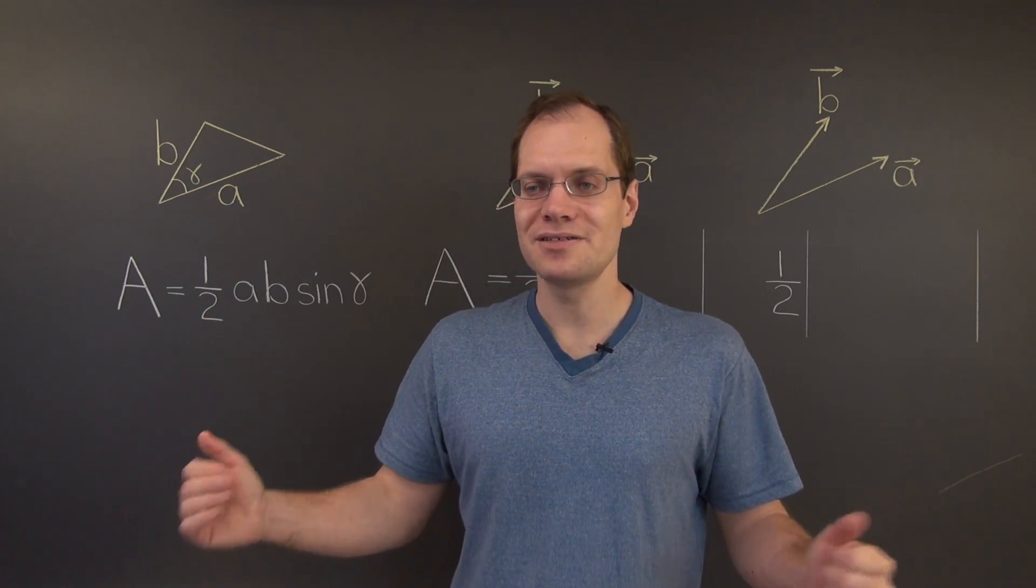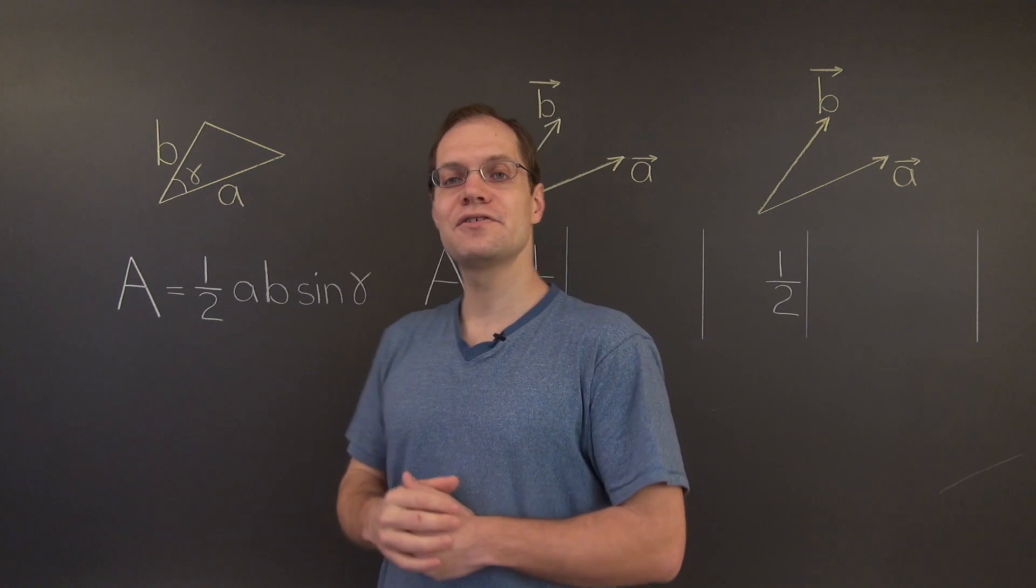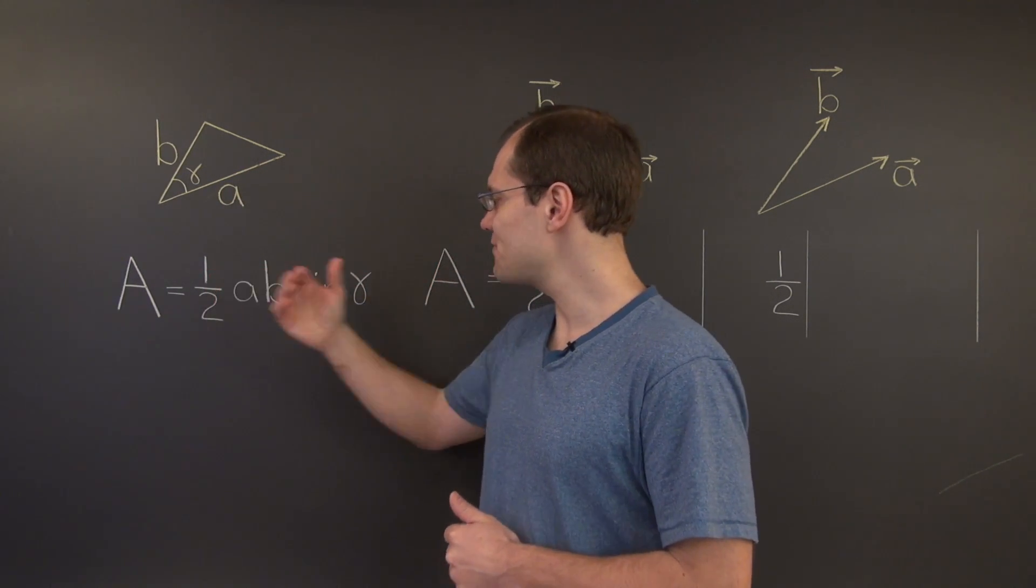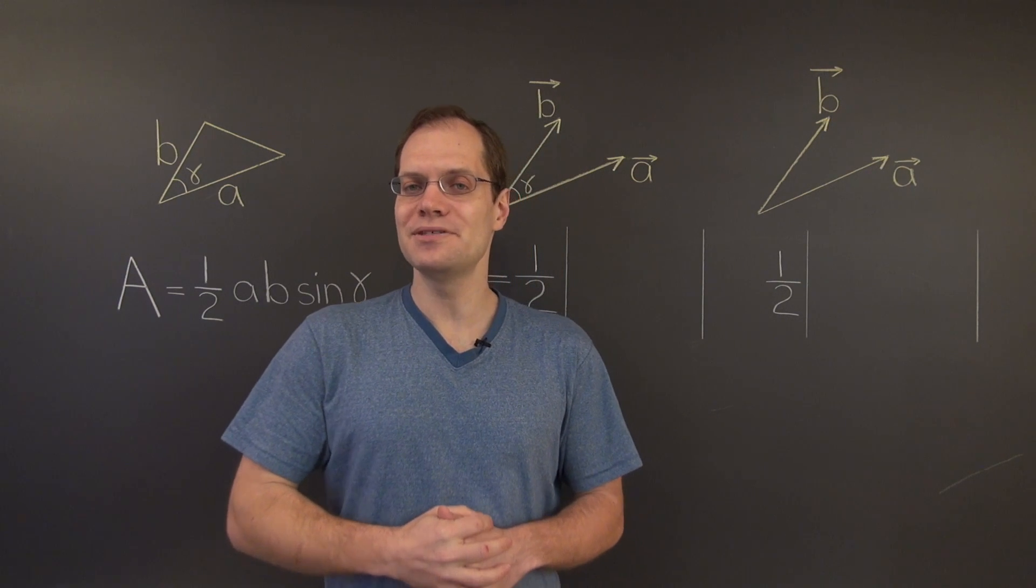I will now use the determinant to derive the very well-known formula that the area of a triangle equals half the product of two of its sides times the sine of the angle between them.